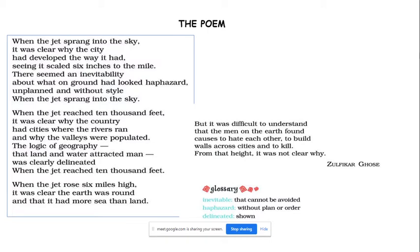The second paragraph: 'When the jet reached 10,000 feet, it was clear why the country had cities where the rivers ran and why the valleys were populated. The logic of geography — the land and water attracted man — was clearly delineated.' Now the jet has moved a little higher to 10,000 feet. From there you can clearly find out why the older and newer cities have grown near rivers — around the Nile, the Thames (around which London was created), the Ganges, and others.